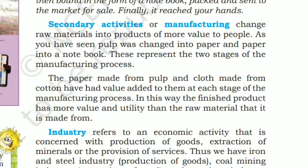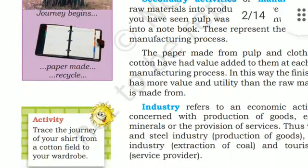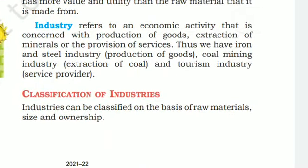Secondary activities, or manufacturing, involve changing raw materials into products of more value to people. As you have seen, pulp was changed into paper and paper into a notebook. These represent the two stages of the manufacturing process. The paper made from pulp and cloth made from cotton have had value added to them at each stage of the manufacturing process. In this way, the finished product has more value and utility than the raw material it is made from.